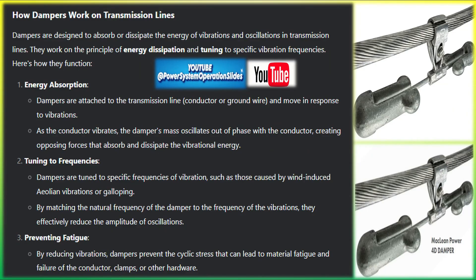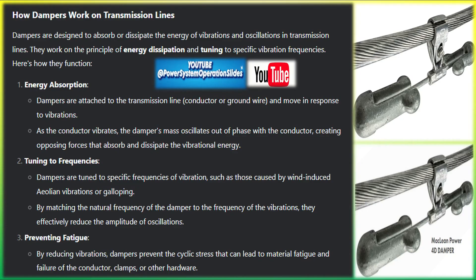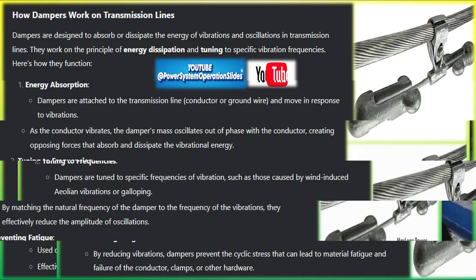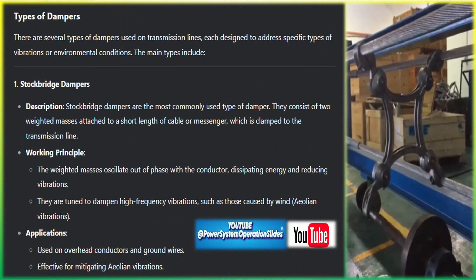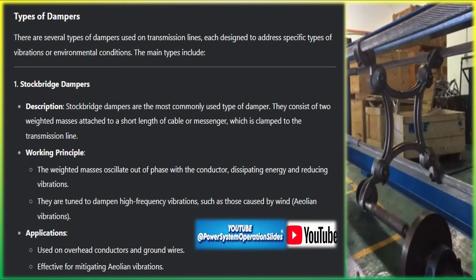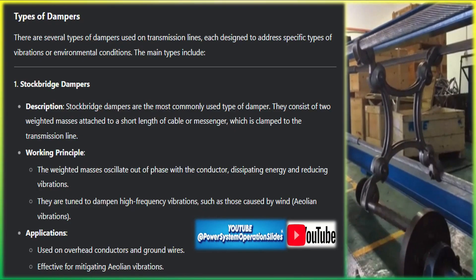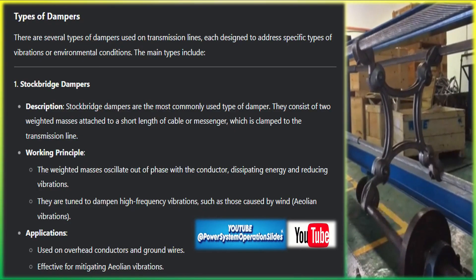Before discussing dampers, it's important to understand the various types of vibrations that occur in overhead transmission lines. Aeolian vibration is caused by low-speed, steady winds between 2 to 12 meters per second flowing perpendicular to the transmission line. As wind flows past the cylindrical surface of the conductor, it causes alternating vortex shedding, which leads to conductor vibration.